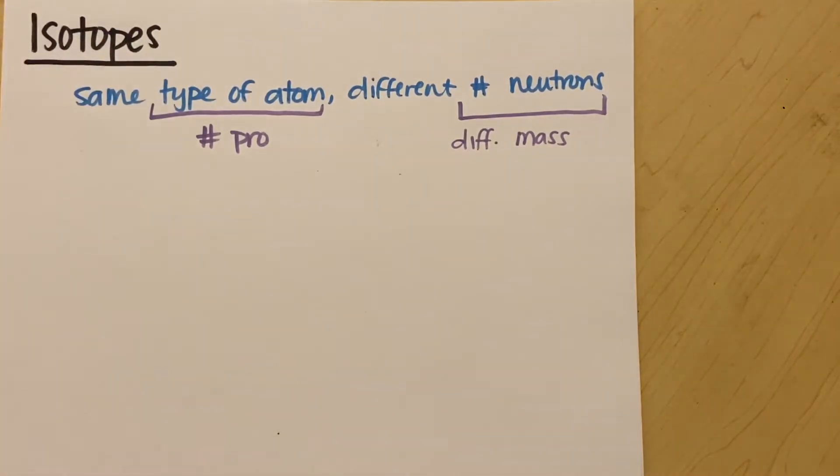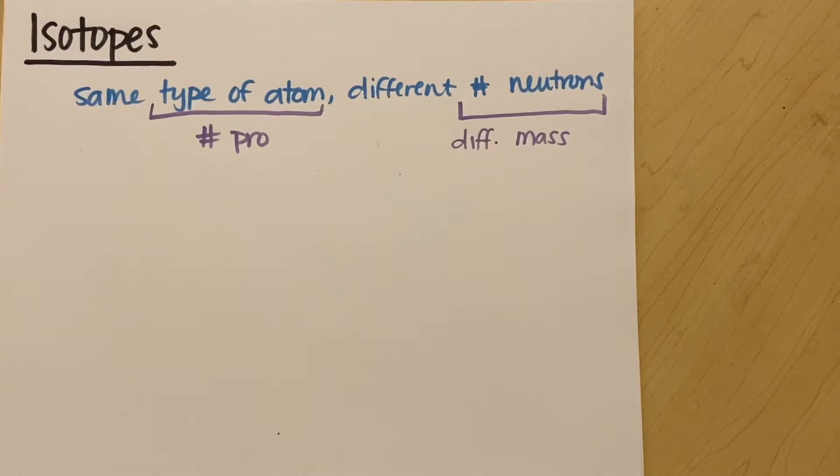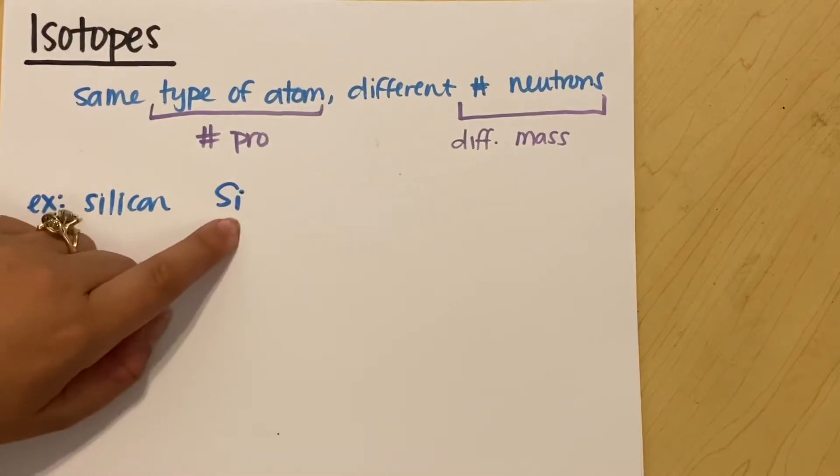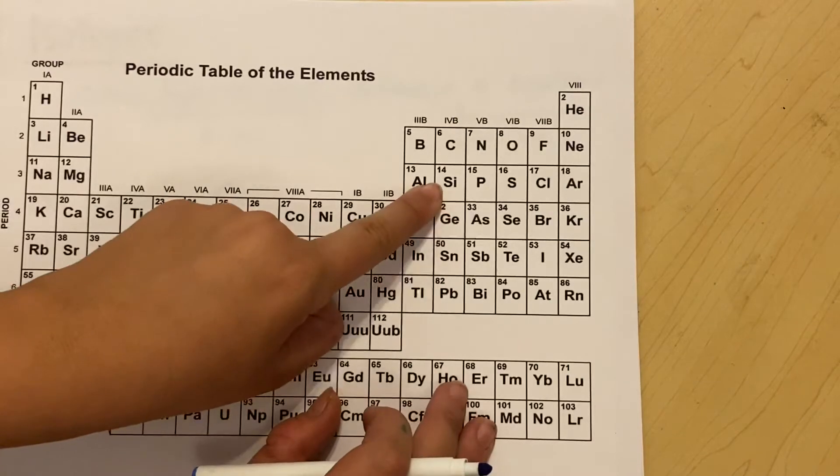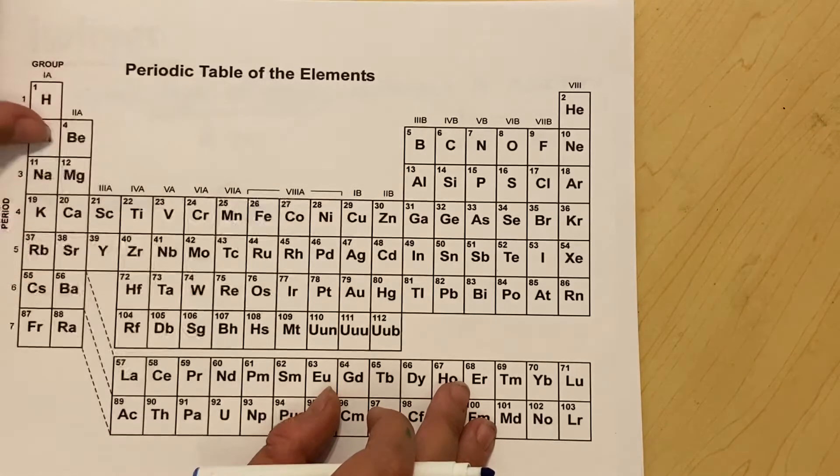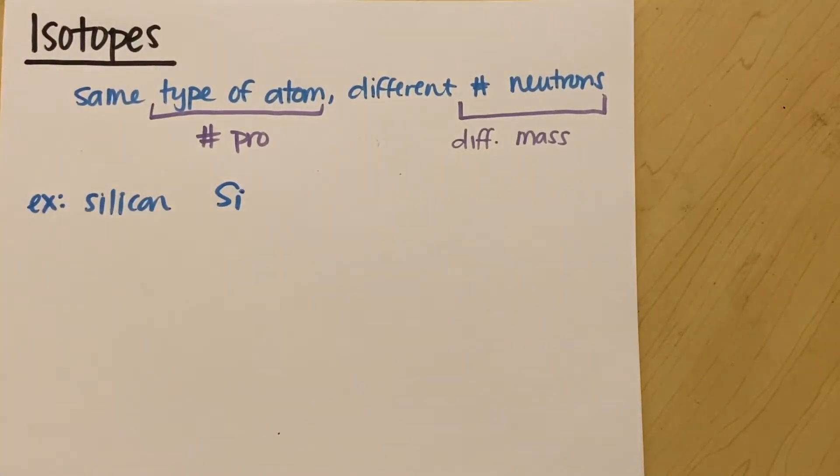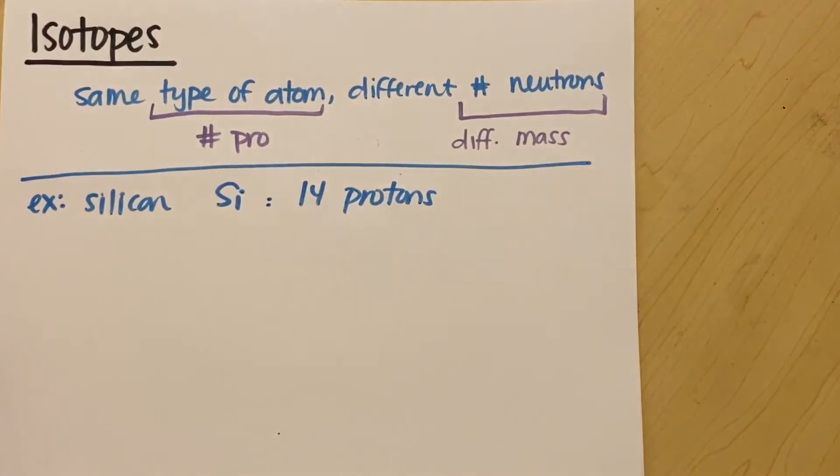Let's just look at examples, because that might be confusing conceptually. So if we looked at silicon, for example, silicon is Si on your periodic table, right here. Silicon has to have 14 protons. Its atomic number is 14. So no matter what, for any type of silicon I have, I'm going to have 14 protons, no matter what.